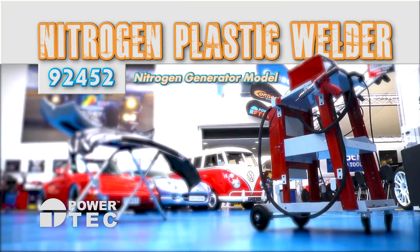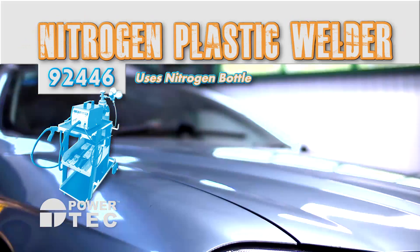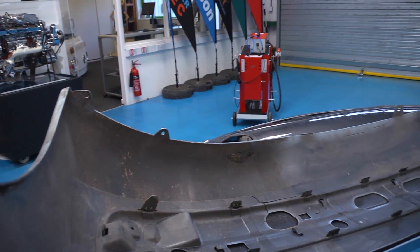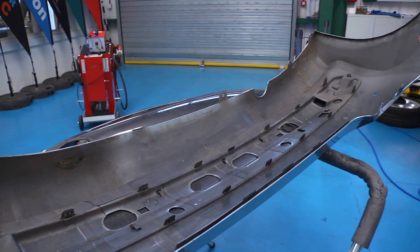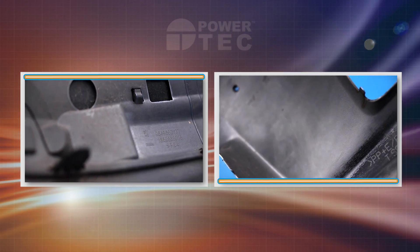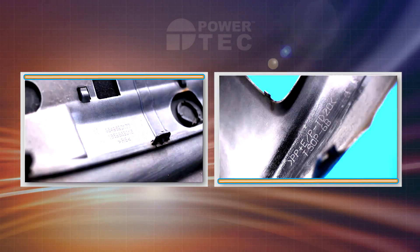Welding with nitrogen gas creates the strongest welds possible because it eliminates oxidization of the plastic during the welding process. Checking the reverse of the panel shows that we are dealing with PP, polypropylene.